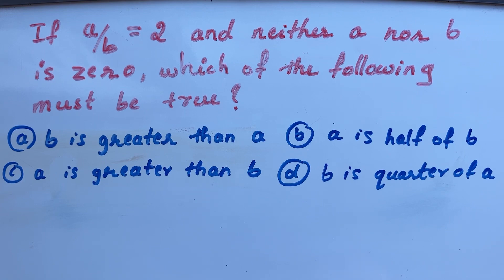if A divided by B is equal to 2 and neither A nor B is 0, which of the following must be true?